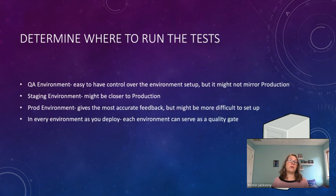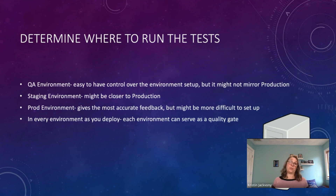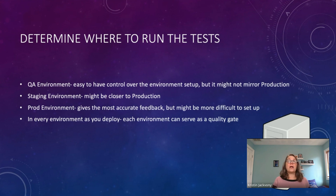You also need to figure out where to run the tests — in your QA environment, staging environment, or production environment. The QA environment gives you easy control over setup but might not mirror production; it may be a good place to run all 150 tests overnight. The staging environment might be closer to production, so it's a good place for a subset of tests. The production environment gives the most accurate feedback but may be more difficult to set up due to permissions or limited freedom to create test users.